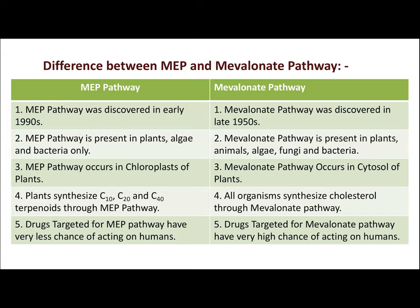Previously it was supposed that all terpenoids synthesized by plants, animals, or microorganisms were derived from the mevalonate pathway. But after the discovery of the MEP pathway, it became clear that not all terpenoids are synthesized by the mevalonate pathway — terpenoids are mostly synthesized by the MEP pathway. The MEP pathway is present in plants, algae, and bacteria only.